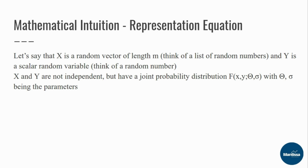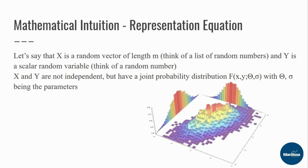Now remember that x and y are not independent but have a joint probability distribution f, where f is a function of (x, y) given parameters theta and sigma. To visualize the joint probability distribution, think of it as two probability distributions — one for x and one for y — each with a normal distribution on each axis. As x varies normally and y varies normally, you see both distributions having a joint probability distribution in the center of the diagram, governed by theta and sigma.